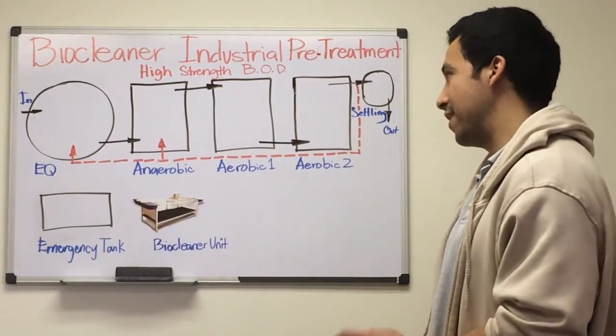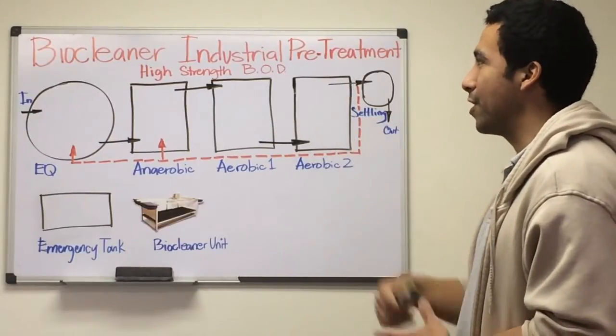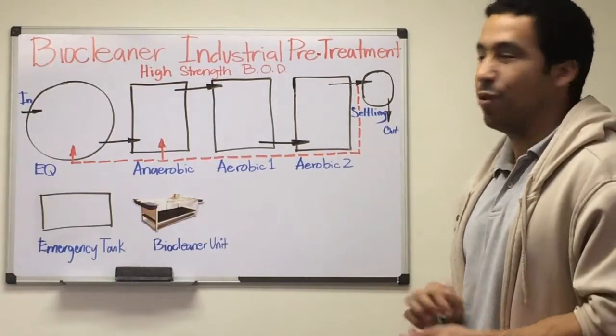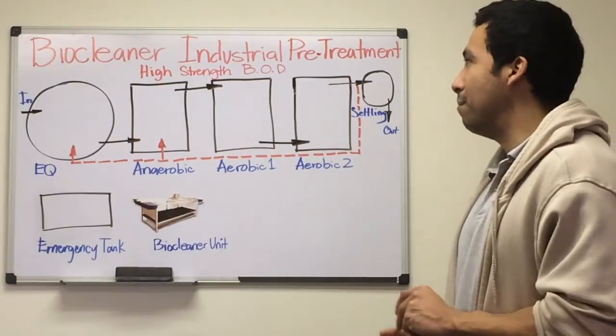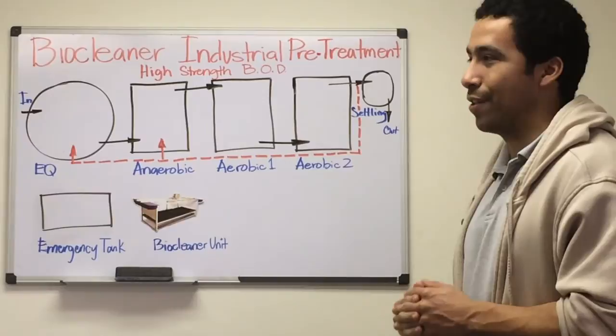In this example, we use high strength BOD, which can come from food processing, dairy, milk processing, and other industrial processes. We have a lot of high strength organic waste.